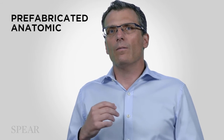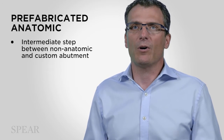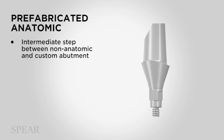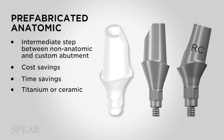The next type of prefabricated abutments to consider are anatomic stock abutments. This is kind of an intermediate step between the non-anatomic abutments and a custom abutment. Why would we use it? There's some cost savings and potentially a savings in terms of time. These abutments can also be used for angle correction and can be fabricated from different materials — titanium, or some systems will have a ceramic stock abutment in this configuration.